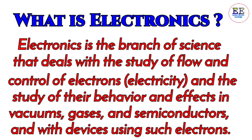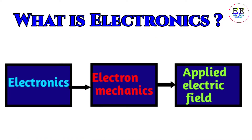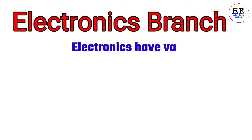Electronics is the branch of science that deals with the study of flow and control of electrons, and the study of their behavior and effects in vacuums, gases, and semiconductors, and with devices using such electrons. The word electronics comes from electron mechanics, which means to study the behavior of an electron under different conditions of an applied electric field.